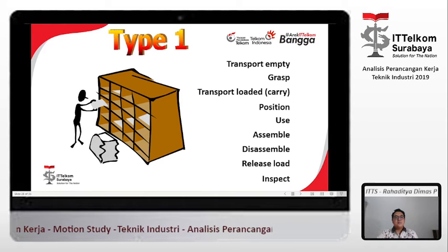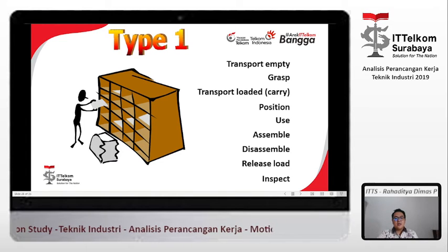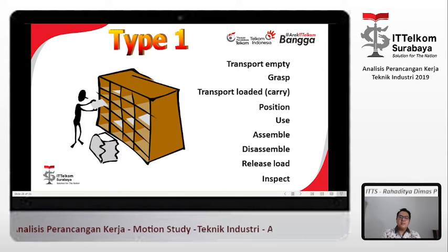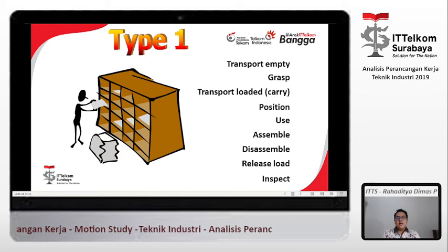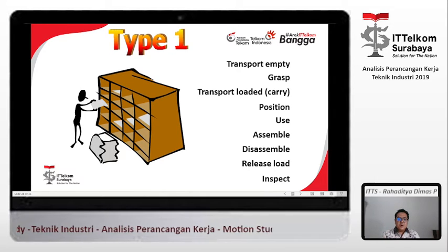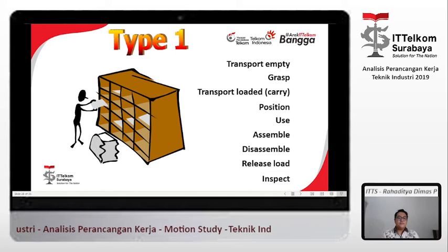Contoh tipe satu: ada transport empty — dia transport tidak bawa apa-apa; ada grasp; ada transport loaded; ada position — nge-pasang; ada use — menggunakan; ada assemble — menggabungkan; ada disassemble — melepaskan; ada release load — melepas tekanan; ada inspect — melakukan inspeksi. Tipe satu ini mainly semuanya adalah gerakan-gerakan operation.